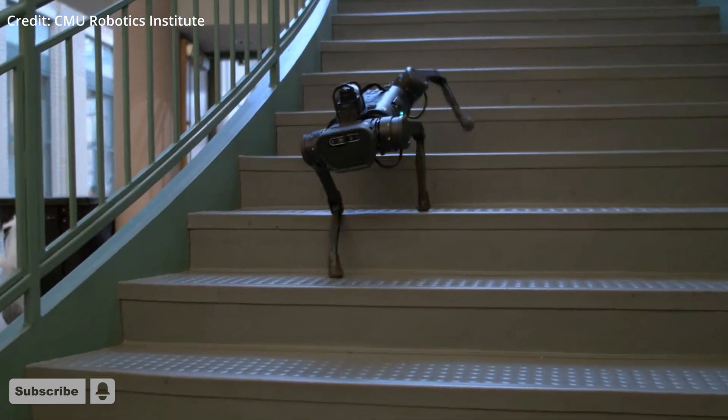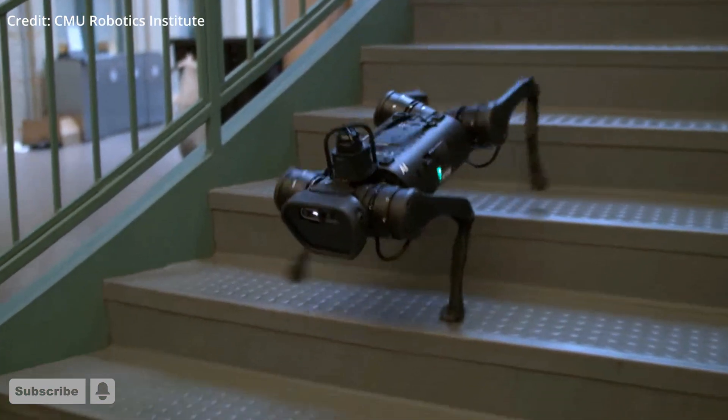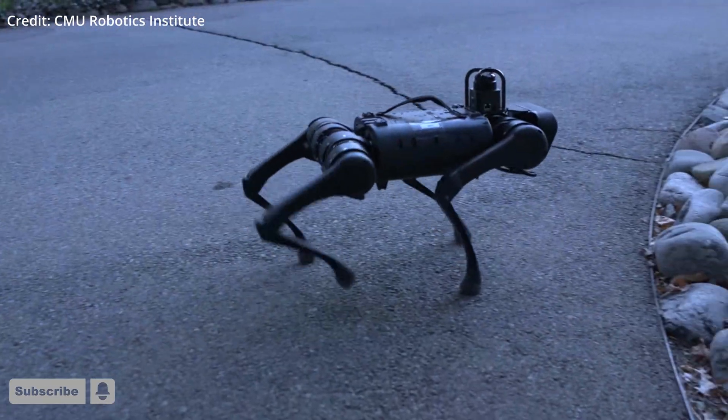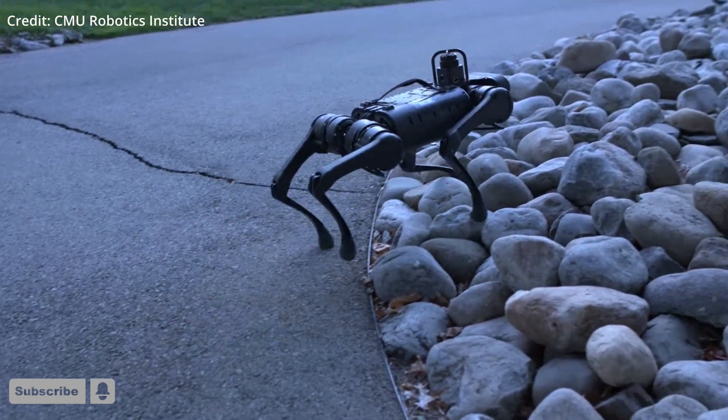The robot dog moves in response to what it perceives without receiving any instructions from the researchers. This method enables the robot dog to respond swiftly to approaching terrain and navigate it successfully.